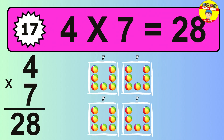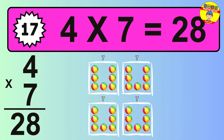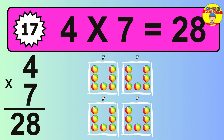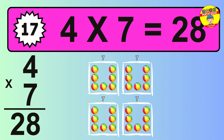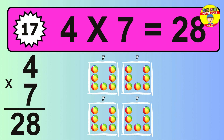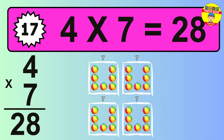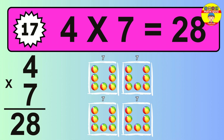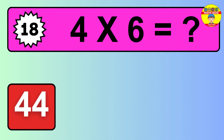The answer is 4 times 7 is 28. To calculate, we have 4 groups with 7 balls each one. So, how many balls do we have? 28 balls.